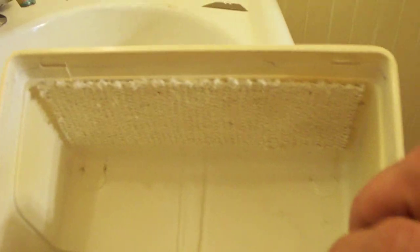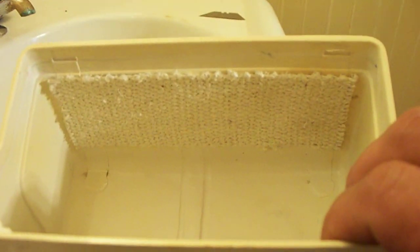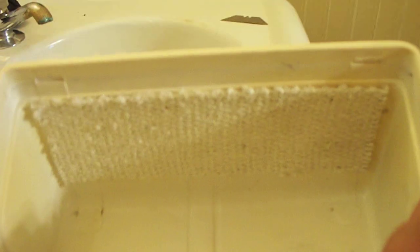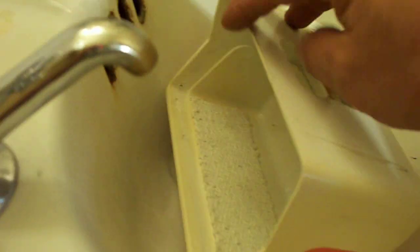Now, number one thing about asbestos is dust and fibers and that's what makes it dangerous. So the first thing I'm going to do is I'm going to set it in the sink and I'm going to run water on it.